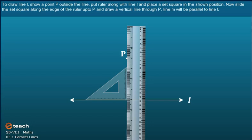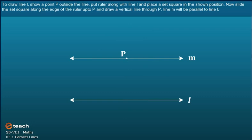Now slide the set square along the edge of the ruler up to P and draw a vertical line through P. Line M will be parallel to line L.